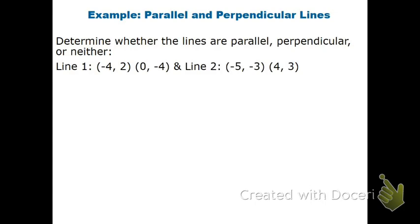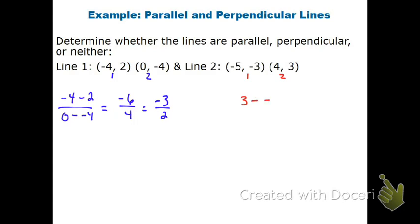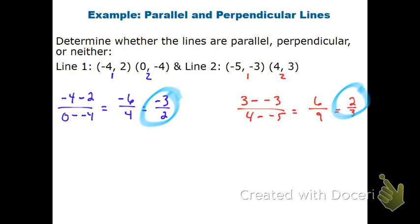With this one, again figuring out whether they're parallel, perpendicular, or neither. Label 1 and 2, subtract the y's: (negative 4 minus 2) over (0 minus negative 4) gives negative 6 over 4, which is negative 3/2. For the second pair: (3 minus negative 3) over (4 minus negative 5) gives 6 over 9, which reduces to 2/3. Comparing the two slopes, they are flipped versions of each other and have different signs, so these lines are perpendicular.